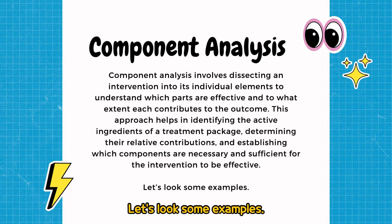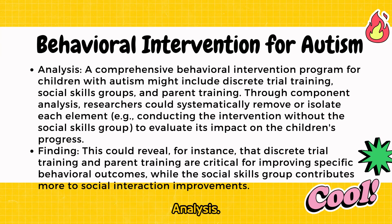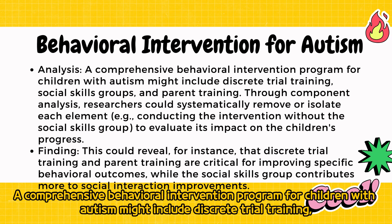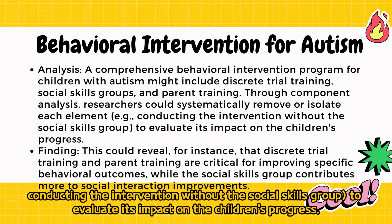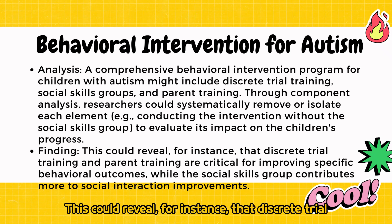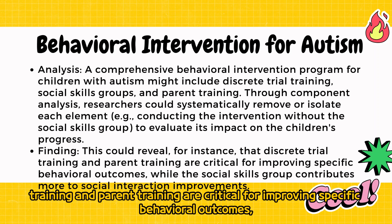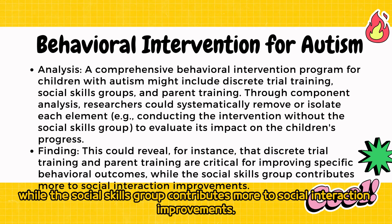Let's look at some examples. Behavioral Intervention for Autism: A comprehensive behavioral intervention program for children with autism might include discrete trial training, social skills groups, and parent training. Through component analysis, researchers could systematically remove or isolate each element — for example, conducting the intervention without the social skills group — to evaluate its impact. This could reveal that discrete trial training and parent training are critical for improving specific behavioral outcomes, while the social skills group contributes more to social interaction improvements.